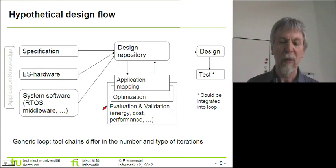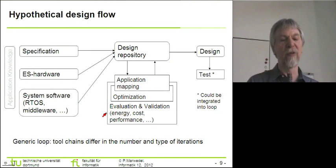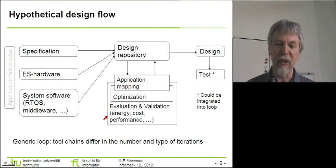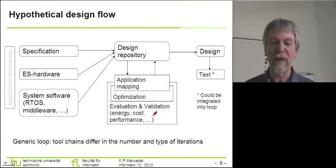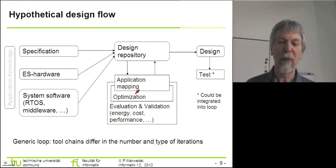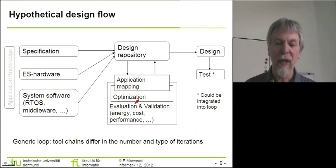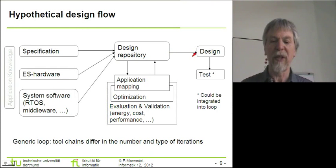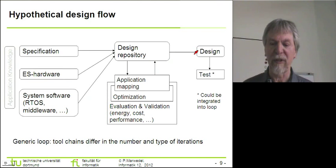During the design flow we are using iterations, and in each step of these iterations we have a number of things to perform. We have to evaluate our designs, or possibly partial designs, with respect to multiple objectives such as energy, cost, and performance — and we will see later on that there are many more such objectives. We also have to validate our partial design and make sure that our decisions so far have been correct. We have to map our applications — our specification — onto the hardware in our system, and we have to do this in an optimizing way. After many iterations we might hopefully arrive at the final design, which is something that we could implement.